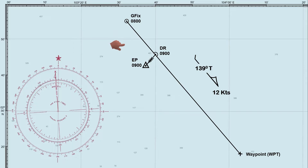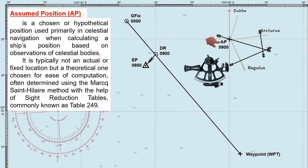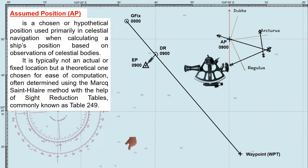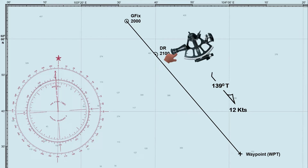This scenario is from my previous video, where I explain the difference between dead reckoning and estimated position. To determine the assumed position, I'll use the same scenario, since AP is often based on either DR or estimated position, serving as a reference point for celestial navigation. If you're not familiar with dead reckoning and estimated position, please check the link in the description for a detailed explanation. Let's assume that at 2100 hours, we have observed the sextant altitude of the star Antares, and the ship's DR position is here.